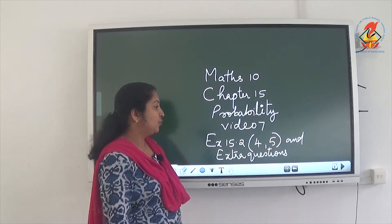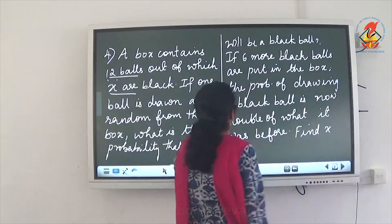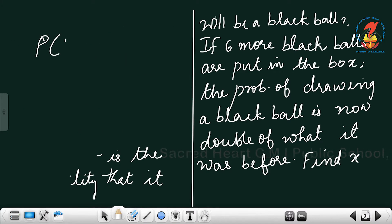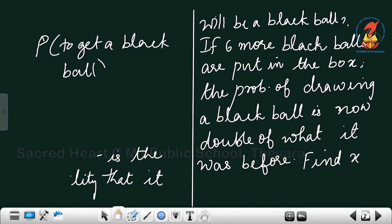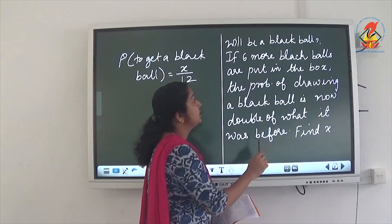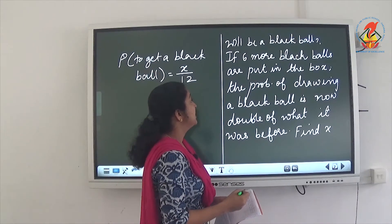Exercise book 10.2, question number four. A box contains 12 balls, out of which X are black. If one ball is drawn at random from the box, what is the probability that it will be a black ball? Total number of balls is 12, X are black. So the probability to get a black ball is equal to X by 12.